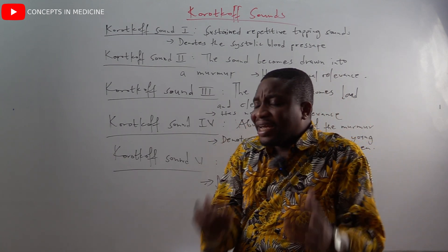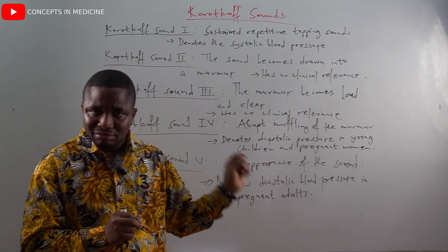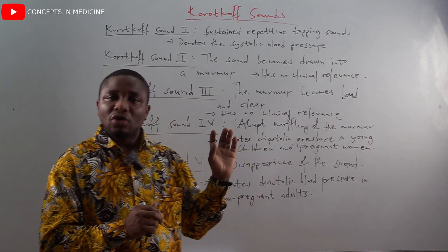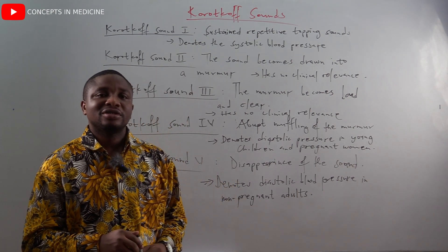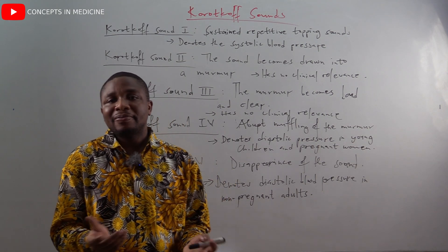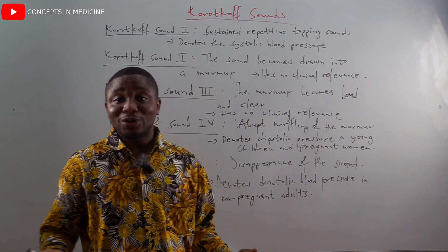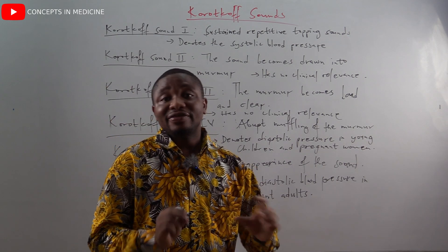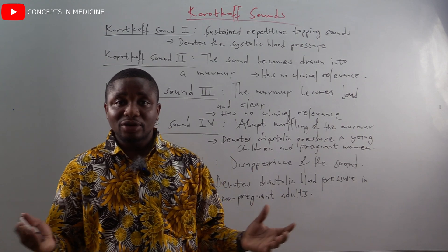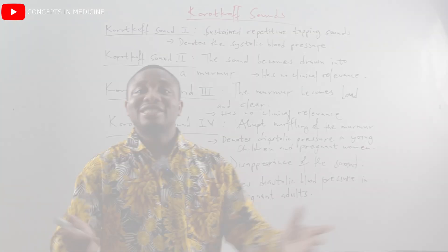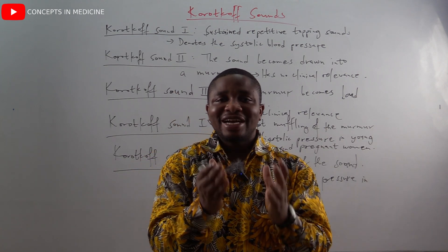Finally, Korotkoff sound five: it is the point at which the disappearance of the muffled murmur — the disappearance of the sound — corresponds to Korotkoff sound five. Clinically, Korotkoff sound five denotes the diastolic blood pressure in non-pregnant adults, referring to both males and non-pregnant females.